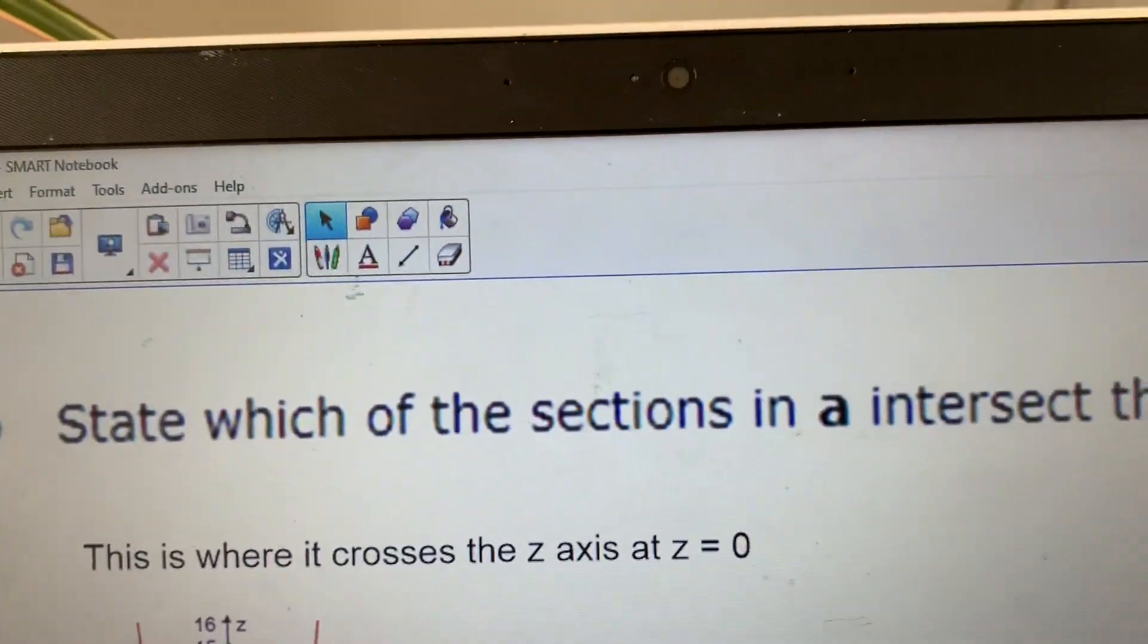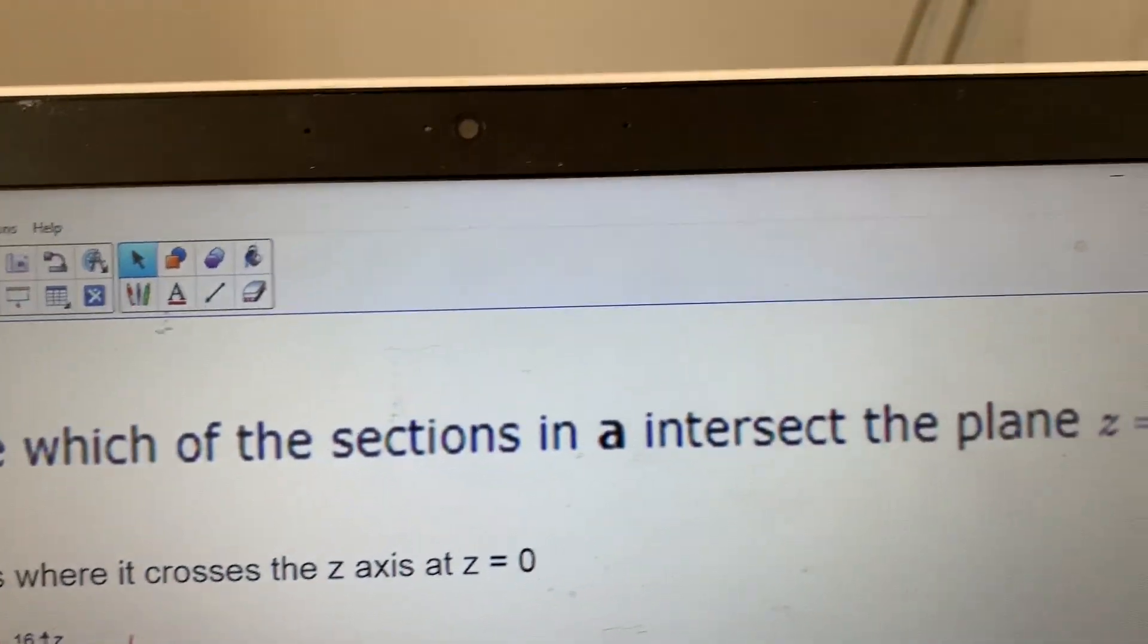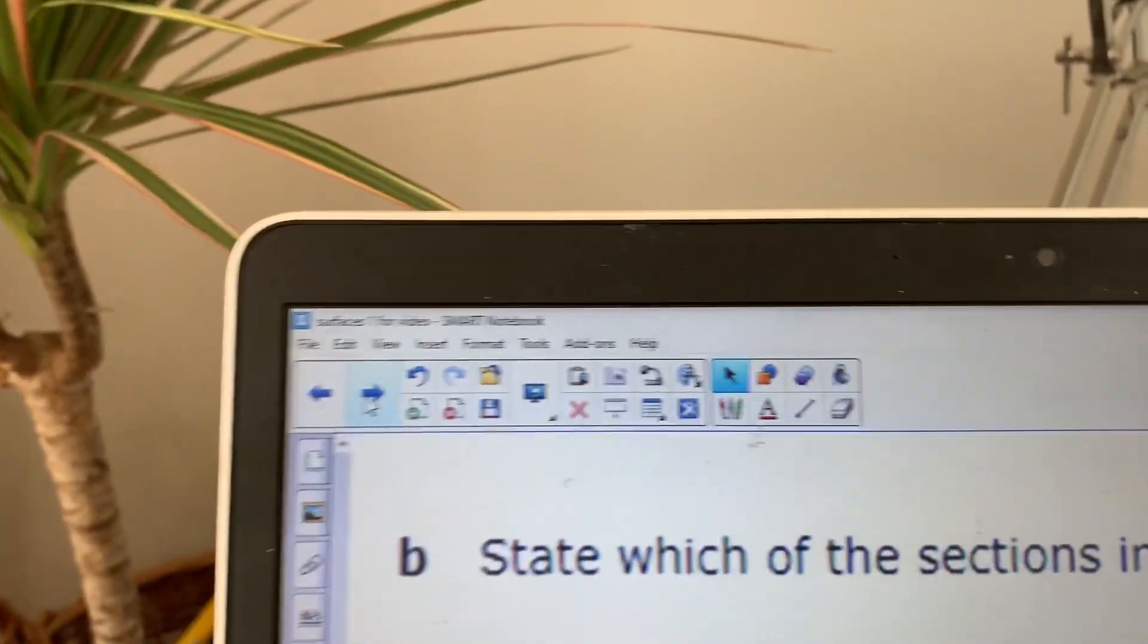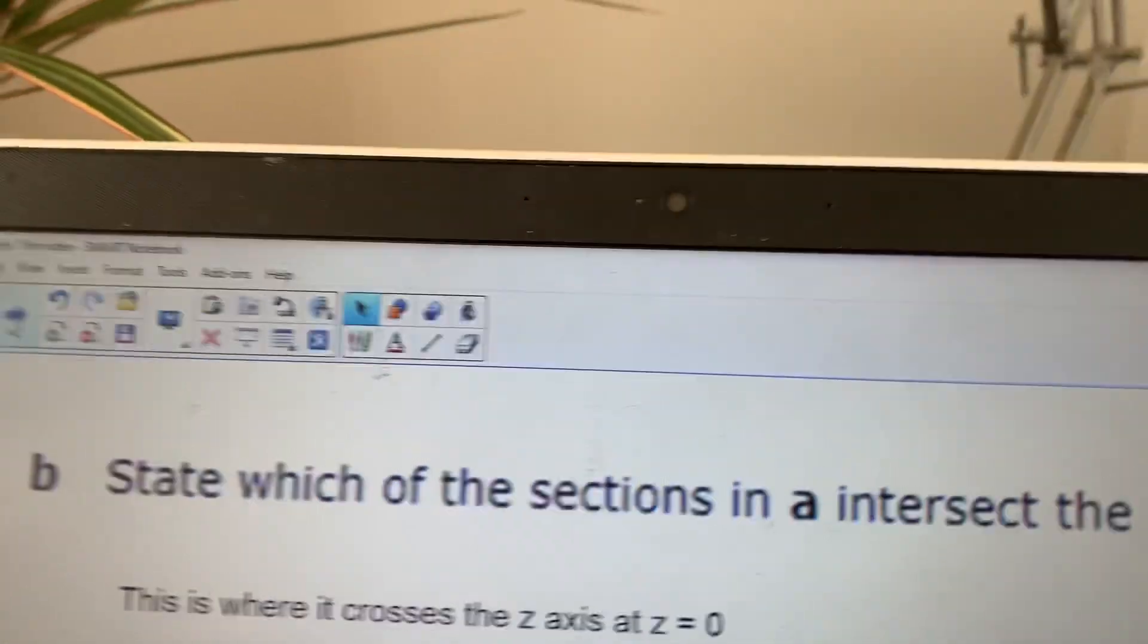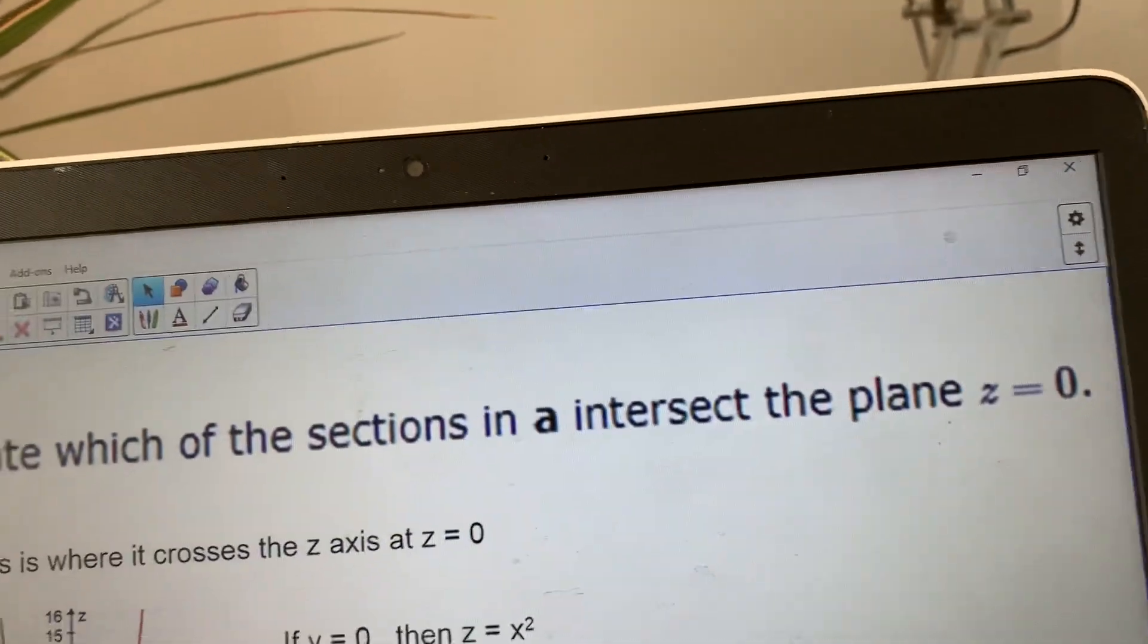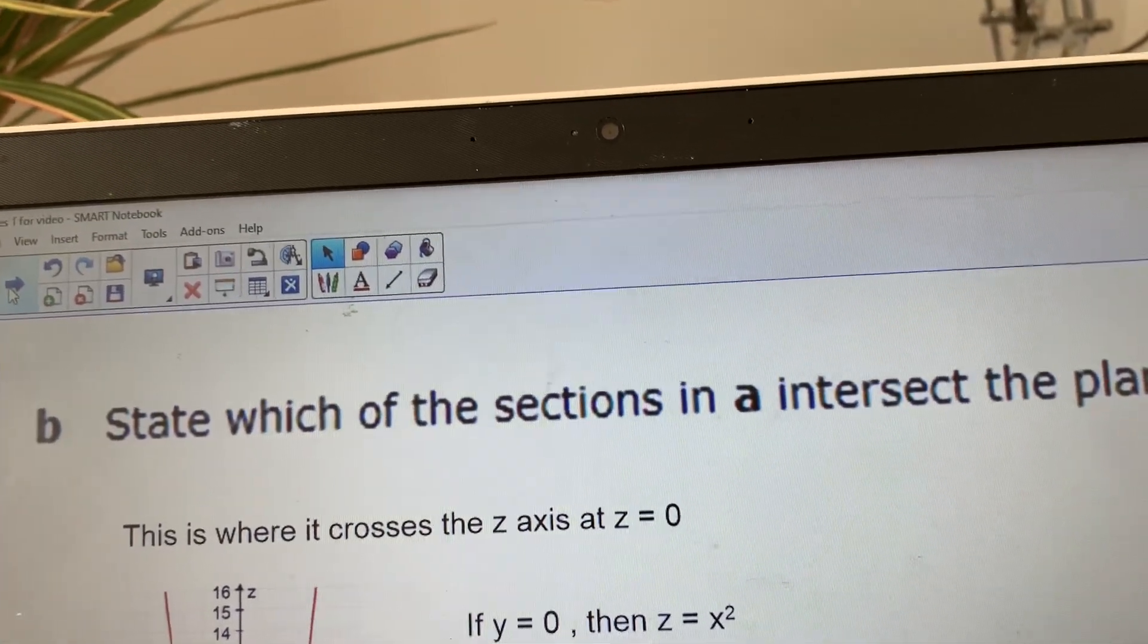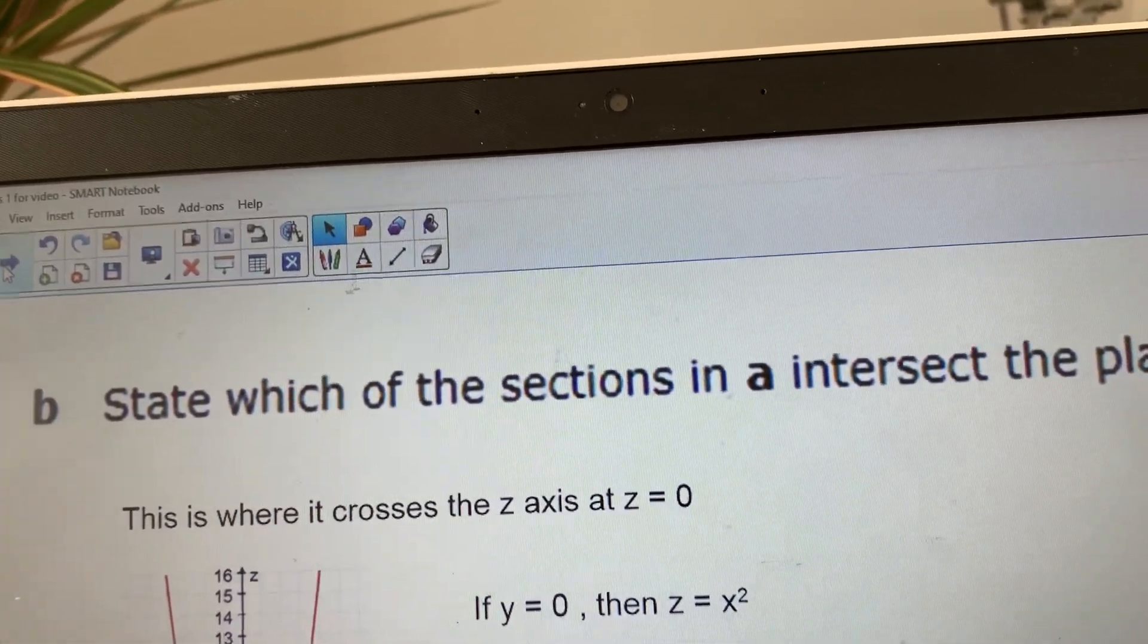This next bit, state which of the sections that you've just drawn intersect with the plane Z equals 0. So basically, it's like, because you've drawn your graphs as though they're like Y equals the equation X, you're looking for where your graph crosses the X axis.